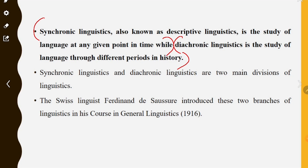Synchronic linguistics and diachronic linguistics are the two main divisions of linguistics. We study language either at one point in time or across multiple periods.